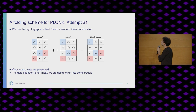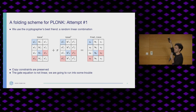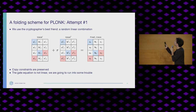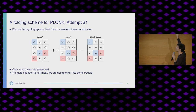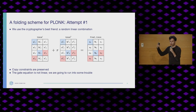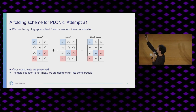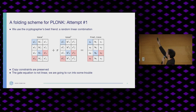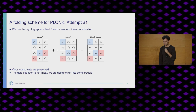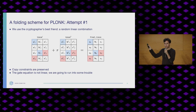So how do we do this for Plonk? We have on the left our two incoming traces — everything with one dash is from the first trace, everything with two dashes from the second. We use the cryptographer's best friend: a random linear combination. We have this random value r, multiply one of our traces by r, add them together, and we have a new trace — importantly of the same size as the first two. Copy constraints are preserved: if my blue squares on the left are equal and my blue squares in the middle are also equal, then the ones on the right will be equal too. Unfortunately, we can't say the same of the gate equation, because our gate equation is not linear — we had QM times A times B — and that's going to put us into some trouble.